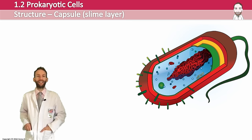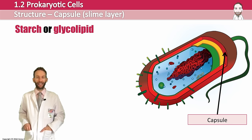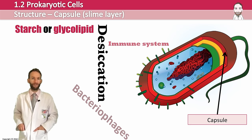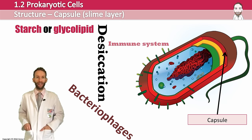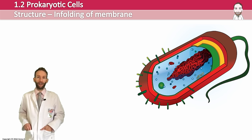Some prokaryotic cells also have an extra layer around the outside called a capsule or a slime layer. It's made from various different molecules such as starch or glycolipid. It protects the bacteria from drying out, which is called desiccation, and is very useful in certain environments. It can also help the bacteria avoid being discovered by the immune system, and it prevents infection by various viruses like the bacteriophage. It can also help them adhere to certain surfaces, so a capsule can be very helpful to the survival of certain prokaryotic cells.